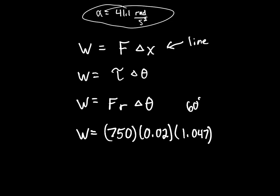60 degrees converted to radians is 1.047 radians. So work equals 750 newtons times 0.02 meters times 1.047 radians. Multiply all that out and you get work equals 15.7 Joules.